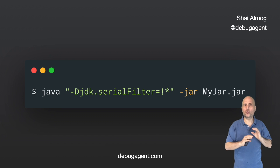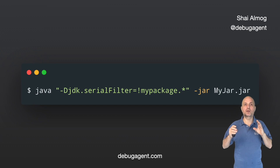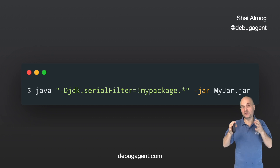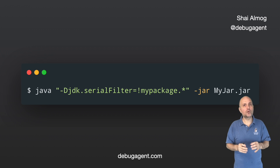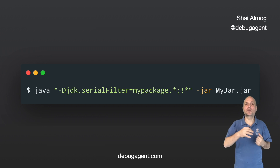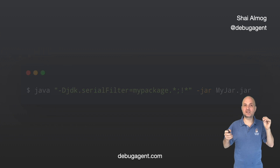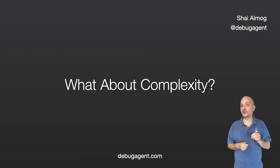This command will block all serialization. Notice I need to use quotes to prevent bash from expanding the star sign. The exclamation point means we wish to block, and the star means we block everything. This is a blacklist — we're blocking a specific package. We can also narrow it down to a specific class, but as I said before, this isn't ideal. Here we have a whitelist where the classes under my package are allowed — they can be serialized, everything else is blocked. This is pretty close to the ideal situation. We can add additional classes and packages as necessary by adding them and separating them with a semicolon.